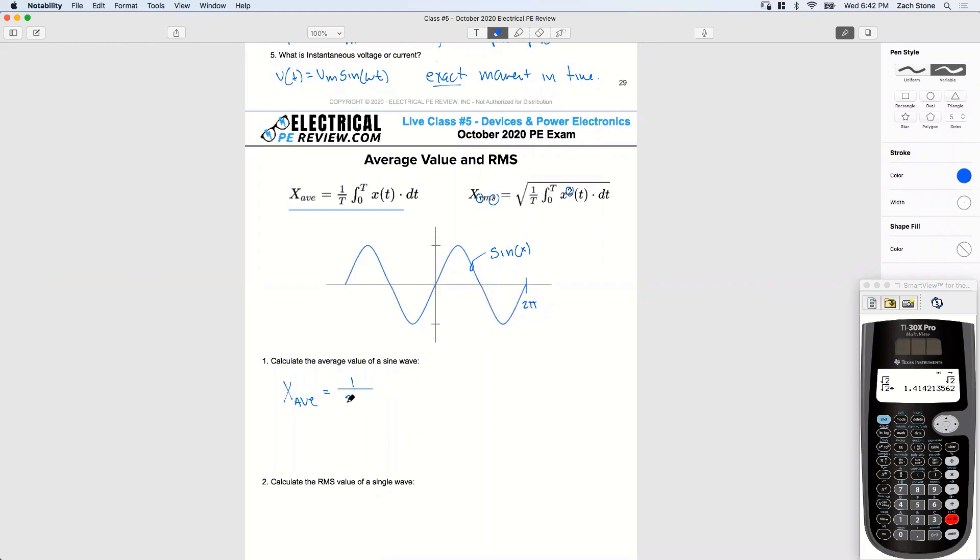So I've got one divided by two pi radians. To the integral of zero to the same period of two pi times x of t. x of t is just your function. In this case, we're going to use sine of x times dx.